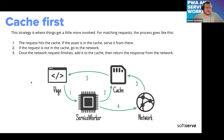Cache first is more complex. When the web application makes a network request, the service worker intercepts it and tries to provide data from the cache. If there is no data in the cache, the service worker makes a network request, gets the data from the network, puts it into the cache, and then provides it from the cache.